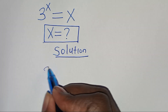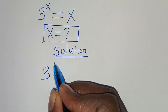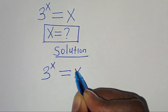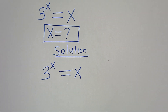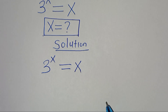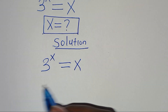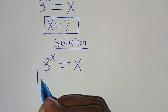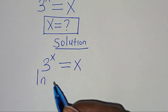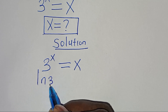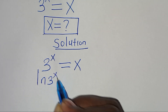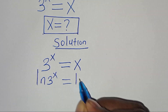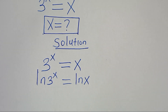We have 3 to the power of x, this is equal to x. The first step is to introduce the natural log on both sides, so that we have ln of 3 to the power of x, equal to ln of x.